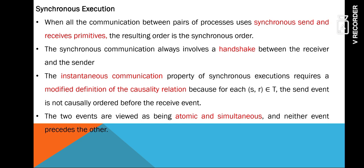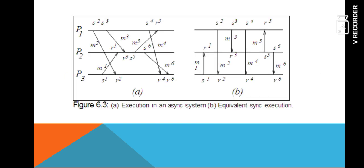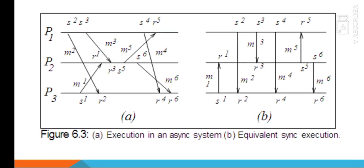The next type is synchronous order. When all communication between two processes uses synchronous send and synchronous receive primitives, we get synchronous order — that is, for every pair of processes. Synchronous communication always involves a handshake between the sender and the receiver, and the communication is instantaneous. This means we have to modify the definition of the causality relation: the send event is not causally ordered before the receive event, since both events are viewed as atomic and simultaneous and neither can precede the other.